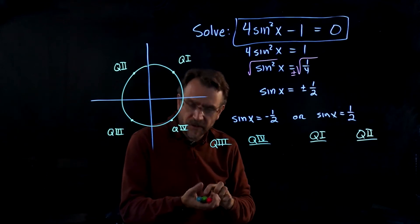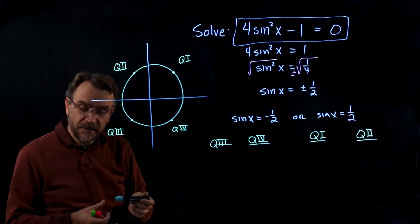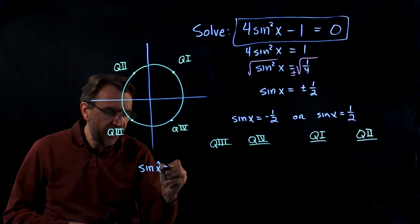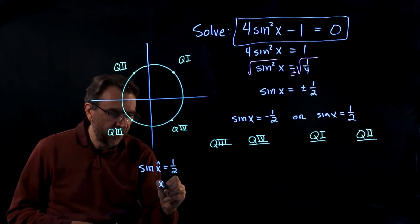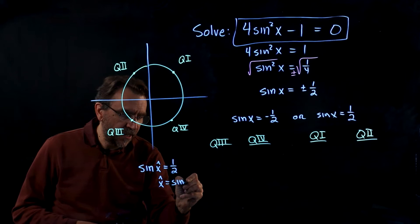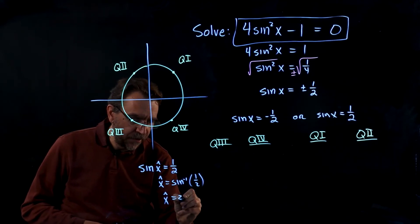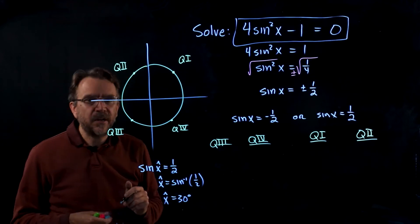Notice they have the same ratio. So they're all going to have the same reference angle. So let's look at sine of x hat equals 1 half. So the reference angle is going to be sine inverse of 1 half or 30 degrees. So that's going to be our reference.